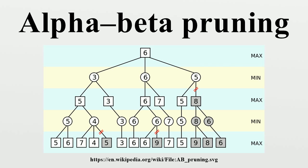Function AlphaBeta: if depth equals 0 or node is a terminal node, return the heuristic value of node. If maximizing player: V equals negative infinity; for each child of node, V equals max(V, AlphaBeta(...)); alpha equals max(alpha, V); if beta <= alpha, break; return V. Else: V equals positive infinity; for each child of node, V equals min(V, AlphaBeta(...)); beta equals min(beta, V); if beta <= alpha, break; return V. The alpha-beta function may return values that exceed the alpha and beta bounds set by its function call arguments.